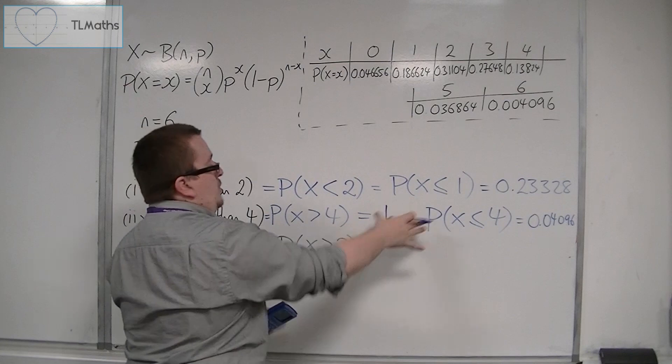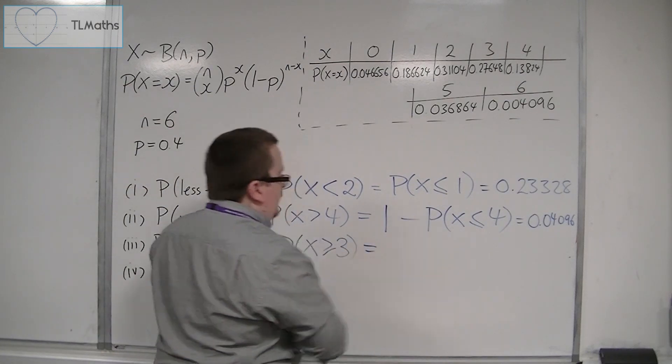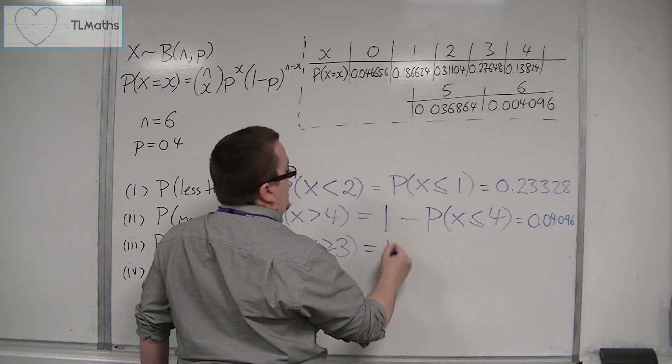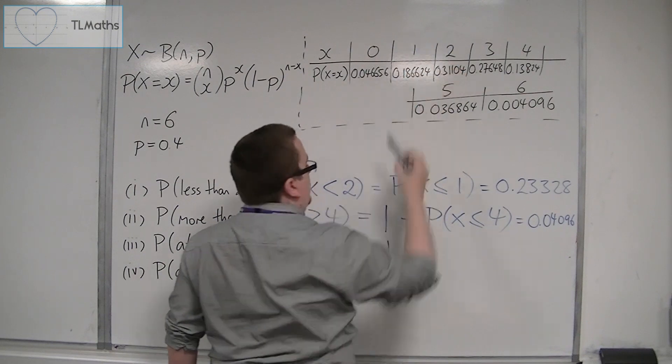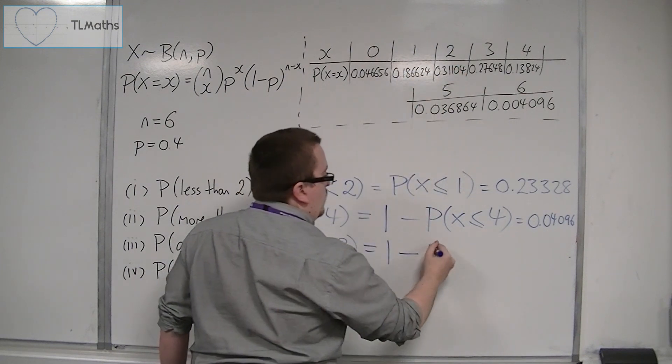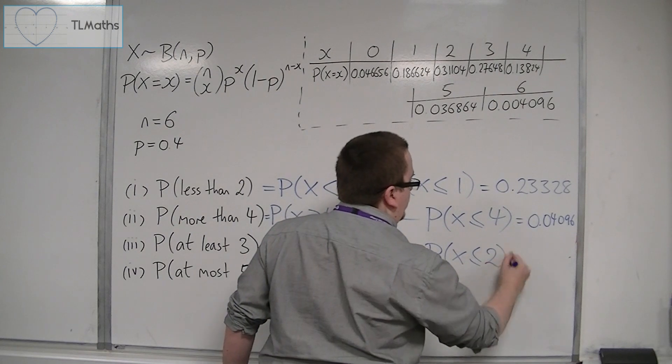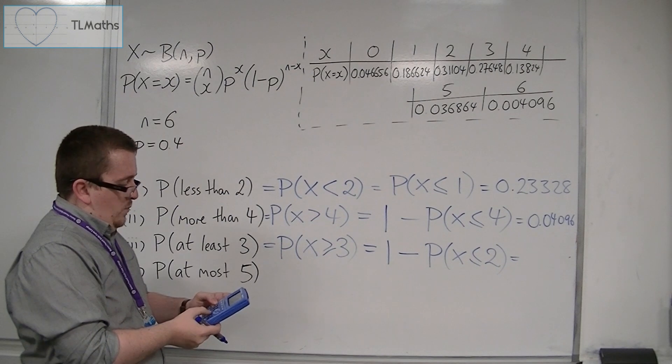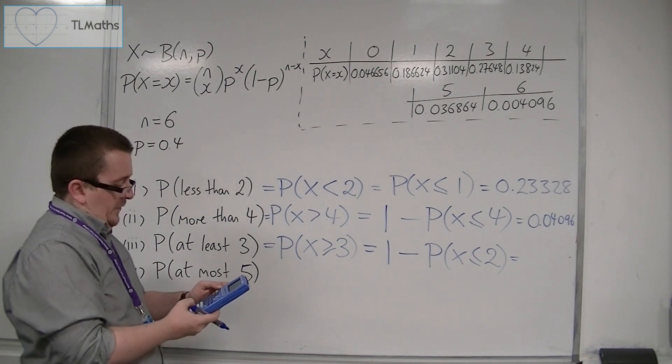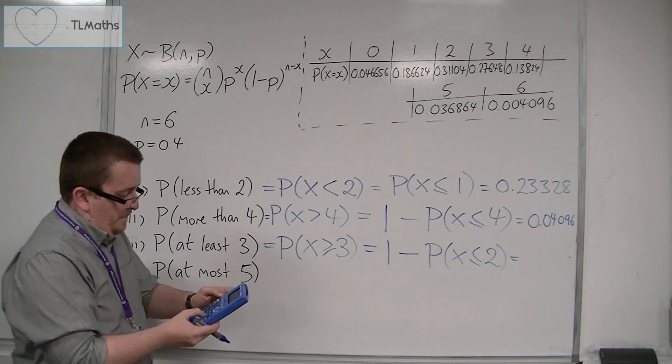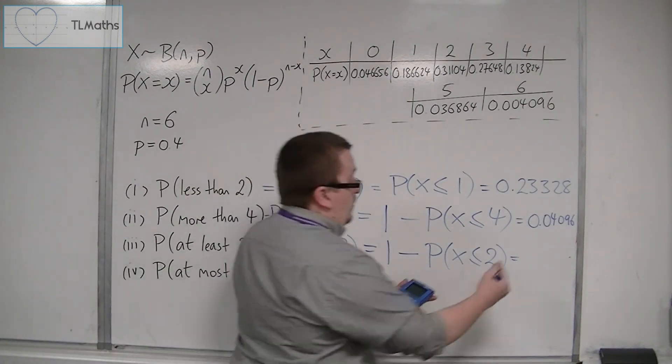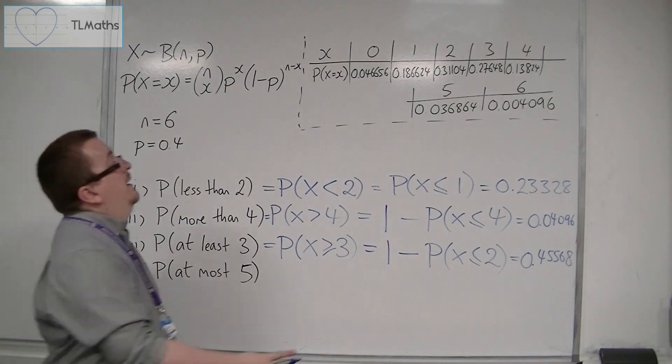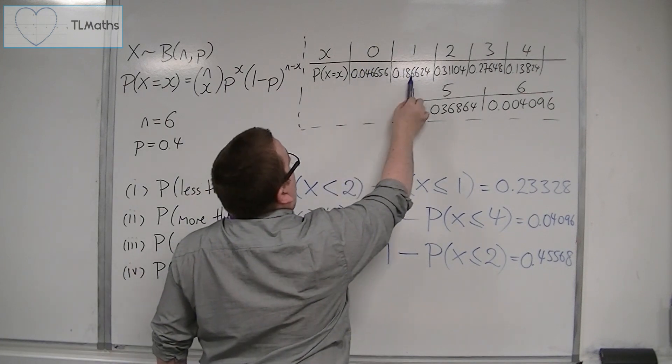And I can calculate it in much the same way as I did there. So if I want 3, 4, 5, and 6, then the bits that I don't want are 0, 1, and 2. So 1 take away the probability of x being less than or equal to 2. So if I do 1 take away binom CDF, 6, 0.4, 2, then we get 0.45568. Which would be the same as adding up these three numbers here.